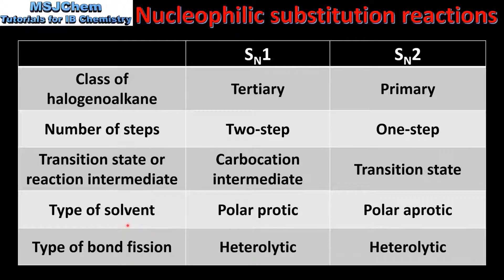Next is type of solvent. The SN1 mechanism is favored by polar protic solvents. The SN2 mechanism is favored by polar aprotic solvents. Next we have type of bond fission. Both the SN1 and SN2 mechanisms involve heterolytic bond fission.